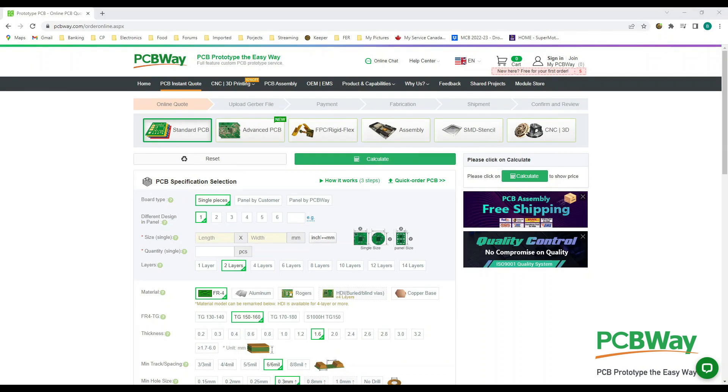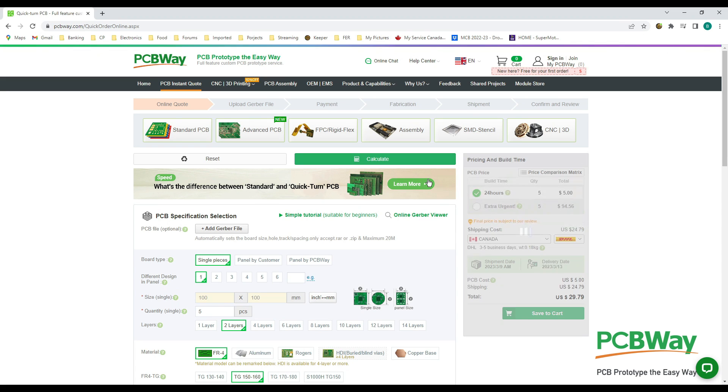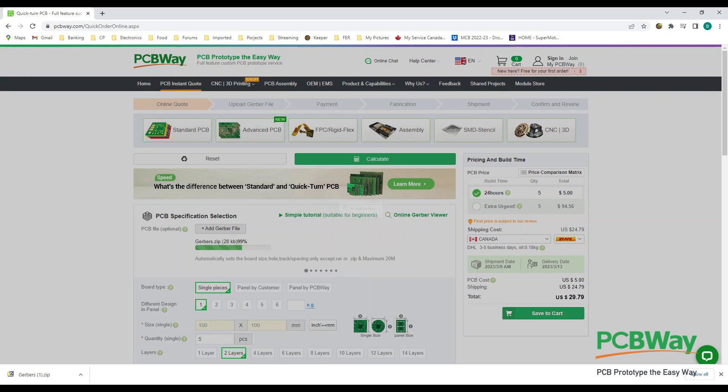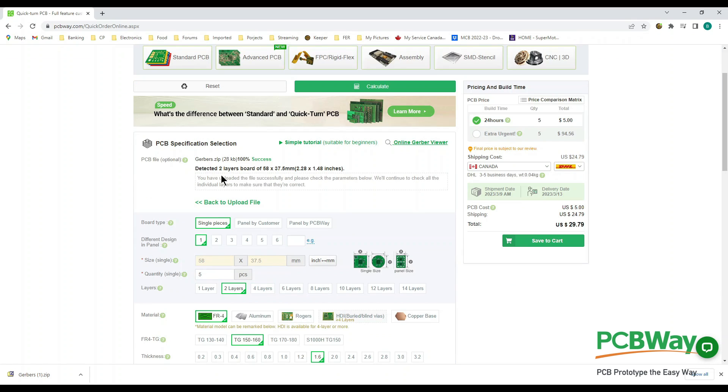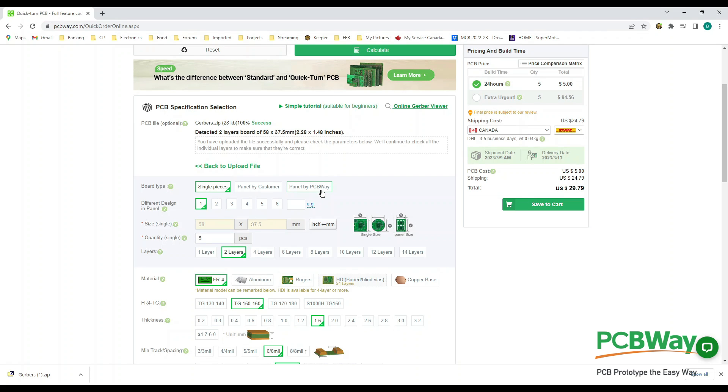Okay, here we are over at PCBWay. What I'm going to do here is go into the quick order. I can just click on add my Gerber files. You just choose a file where you've zipped up all your Gerber files and your drill file and you open it up. Here we are, it's decided that we have a two layer board and it's got the dimensions correctly. Now all we have to do is choose our options.